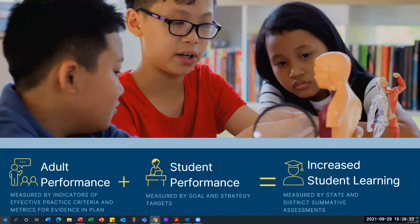This slide talks about adult performance plus student performance equals increased student learning. The bigger piece is that adult performance is measured by the indicators — that's what we're using Derago Star to do: measure what we do and how that affects the students we teach. Student performance is measured by goals and strategy targets. Inside Derago Star, you can actually put goals and performance measures, and if you want to increase certain areas, you can type that right into Derago Star so it becomes part of your plan.